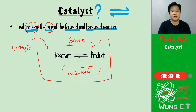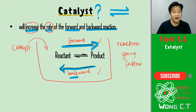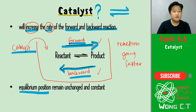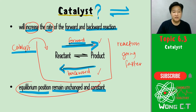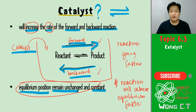So when we say we're increasing the rate of reaction, it means your reaction is going faster. And since both the forward and the backward reaction are both going faster, therefore addition of catalyst into your reaction will not change the equilibrium position. Your equilibrium position will remain unchanged and constant. What will change is your reaction will achieve equilibrium faster.